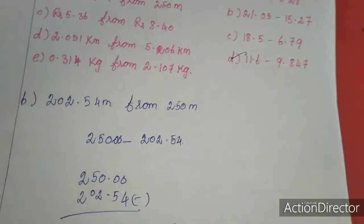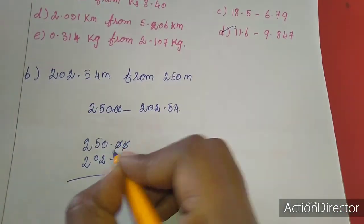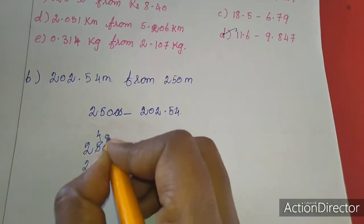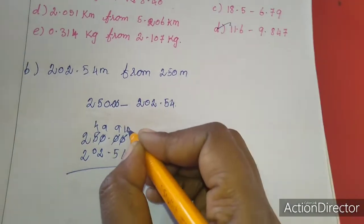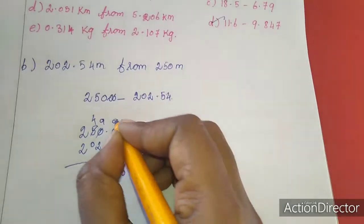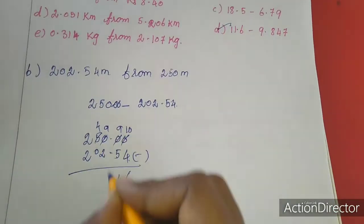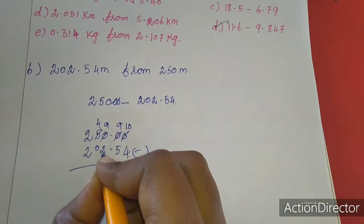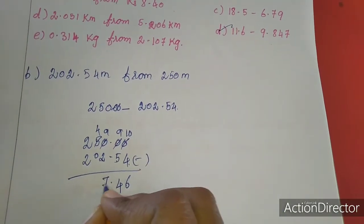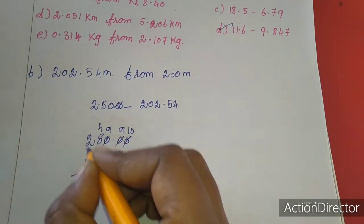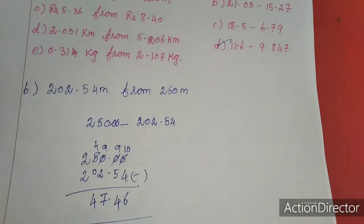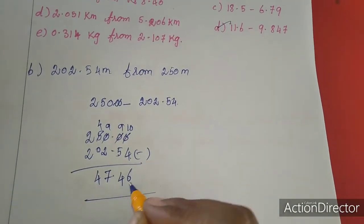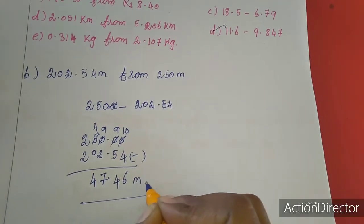Now I am going to subtract this. So I want to get borrow 4, here and all became 9, here 10. So 10 minus 4 is 6, 9 minus 5 is 4, here dot, 9 minus 2 is 7, 4 minus 0 is 4, 2 minus 2 is 0 only. So we need to write, so the value is 47.46 meter.